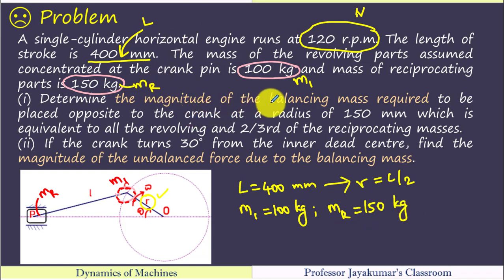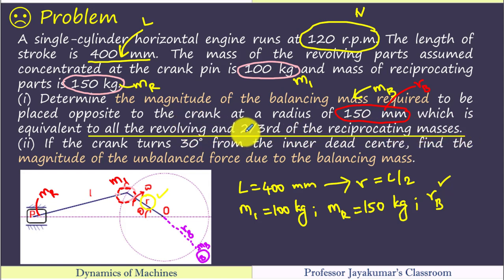Determine magnitude of the balancing mass required. So we need to find balancing mass that is to be added, to be placed opposite to the crank at a radius of 150 mm. So they have given here radius of rotation of the balancing mass. So Rb is given. We need to balance the entire revolving mass and two-third of the reciprocating mass. The two-third of the reciprocating mass is what we call C.